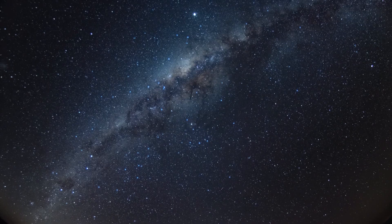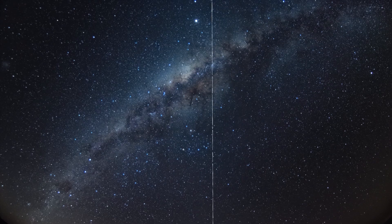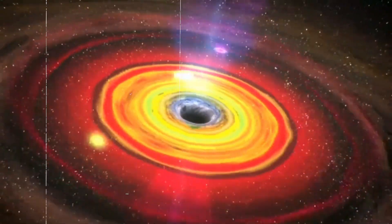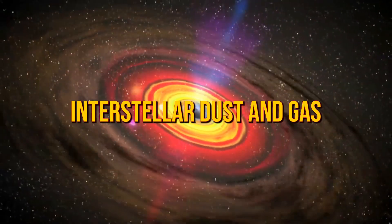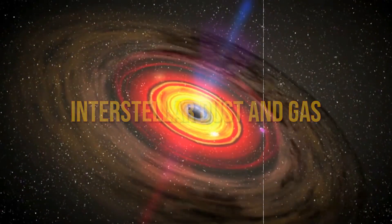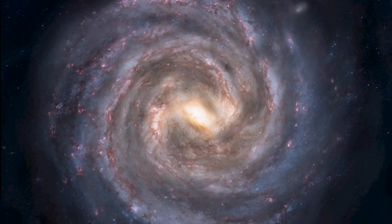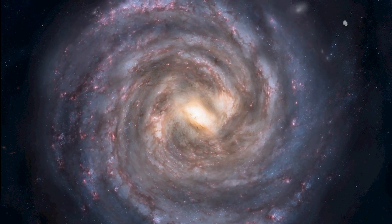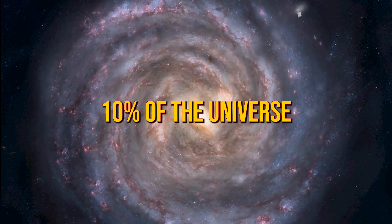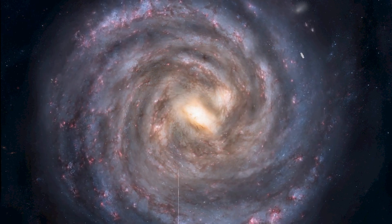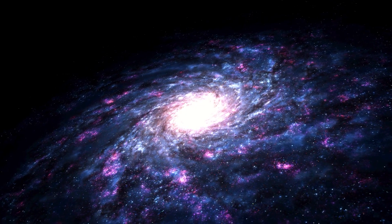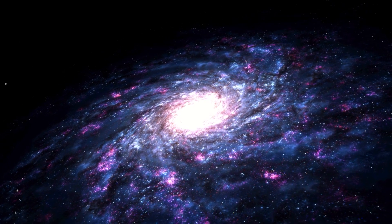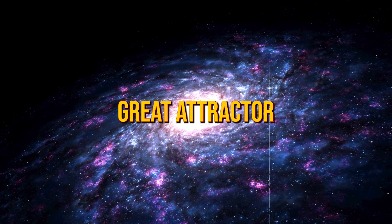You see, when we try to peek into the depths of space from within our galaxy's plane, we're met with a dense haze of interstellar dust and gas. This clutter creates a celestial blind spot known as the Zone of Avoidance, blocking our view of roughly 10% of the Universe. And guess what? Right in the heart of this obscured region lies the enigmatic Great Attractor.